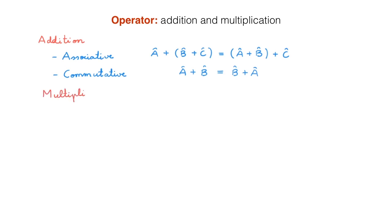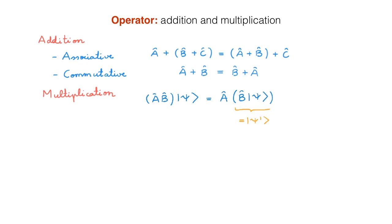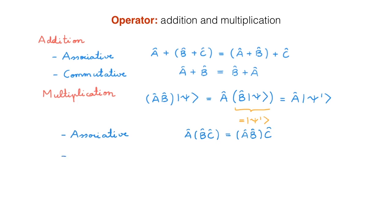When we look at multiplication, we first have to define what we mean by multiplying two operators together. Multiplication of operators is defined by its action on a ket: the product AB acting on a ket psi is defined by first acting on psi with B and then acting on the result with A. In other words, B on psi gives a ket psi-prime, and then A acts on psi-prime. The first property of operator multiplication is that it is associative: A times B times C equals A times B times C.